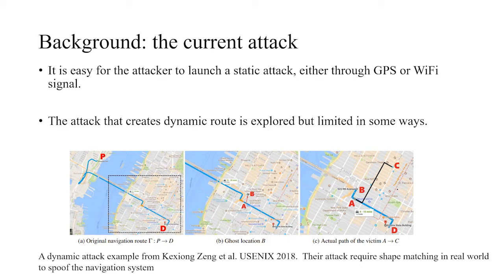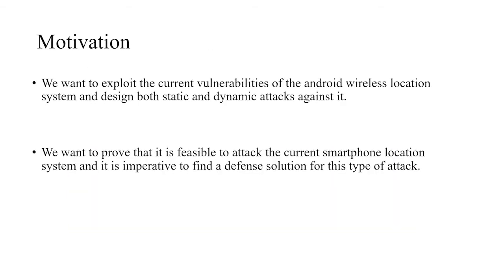Because of the security issues, there are a lot of attacks against current positioning systems. It's actually easy for the attacker to launch a static attack. For dynamic attacks, it's not that easy and limited. As we can see from this figure, an attacker from Qixing Zeng et al. requires shape matching in the real world with the same shape as the attack route to spoof the navigation system, which is not easy to achieve. Our motivation is to exploit the current vulnerabilities of Android wireless location systems and design both static and dynamic attacks. We want to prove that it's feasible to attack the current smartphone location system and it's important to find a defense solution.